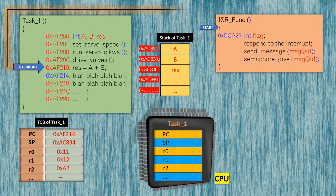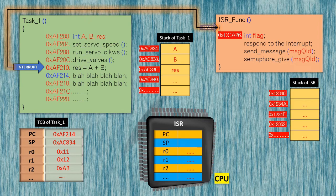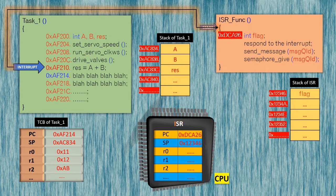Note that context has been discussed in detail in a previous video. Then the processor determines the address of the interrupt service routine associated with the interrupt that just occurred, and loads the processor with the context or information of the ISR. Therefore, the processor starts executing the ISR code.